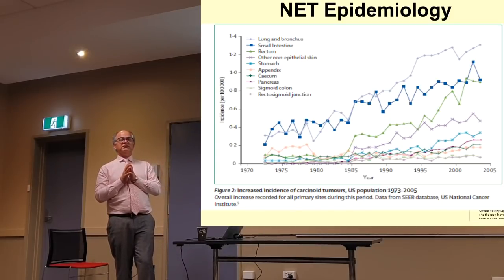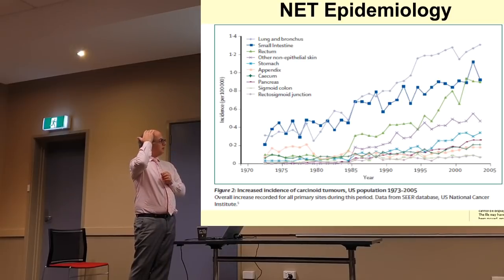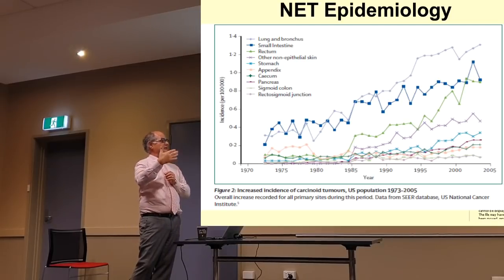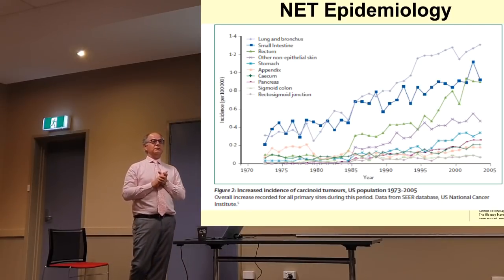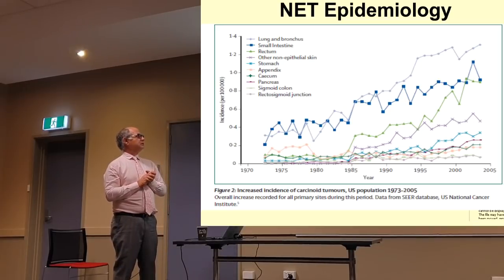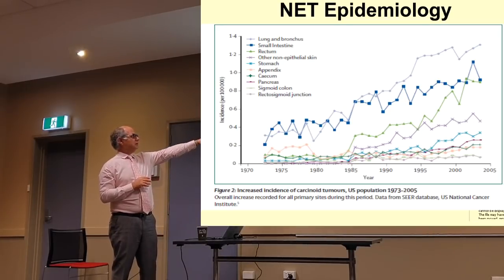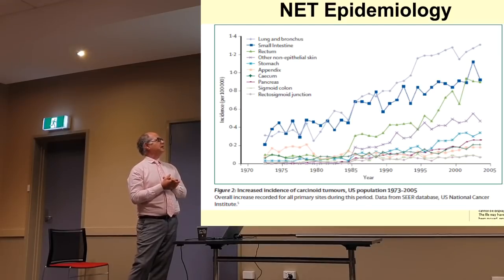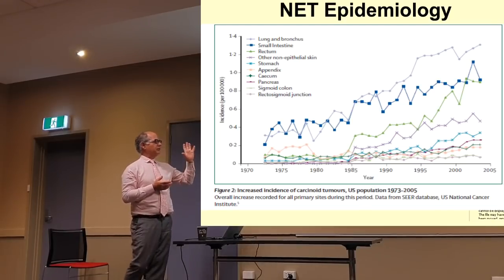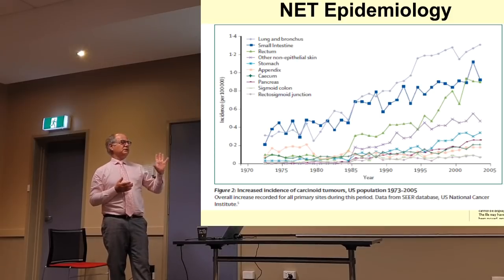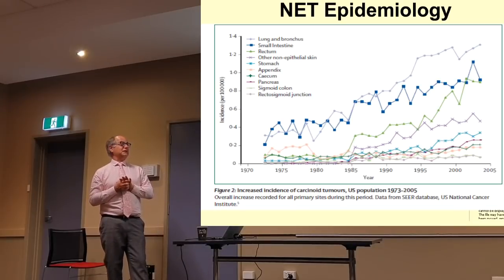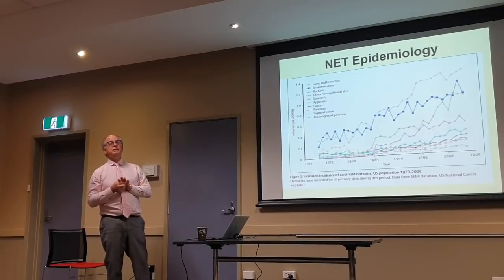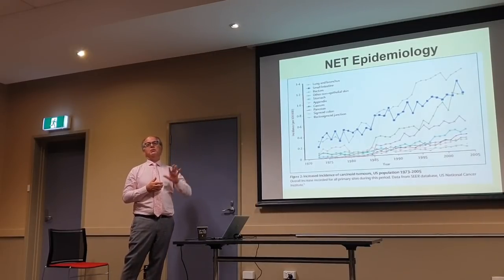The number of cases we're seeing per year is increasing. This is a survey from the US looking at 1970 to 2005, looking at all the NET cases recorded within their population data, showing that those symbols correspond to different primaries — from lung, small bowel, appendix, and pancreas — and for all sites of NETs, the incidence is increasing. The US has now published more recent data showing the same trends, and I've also analysed the Victorian data showing the same trends. We're seeing more and more NETs.